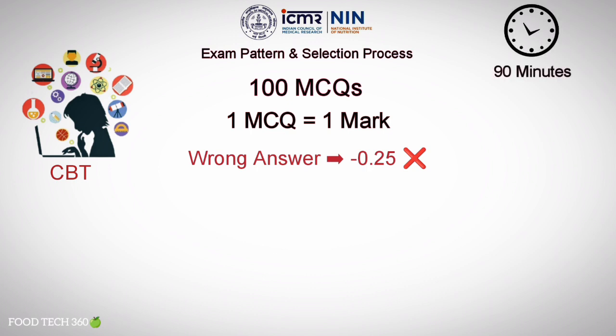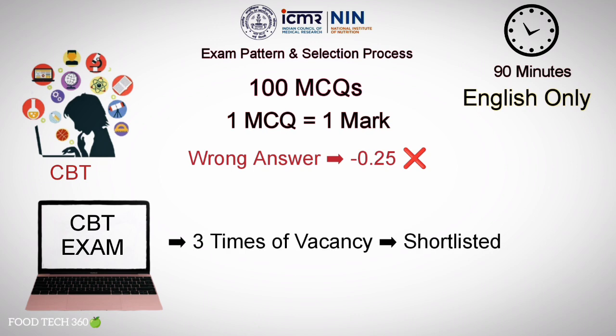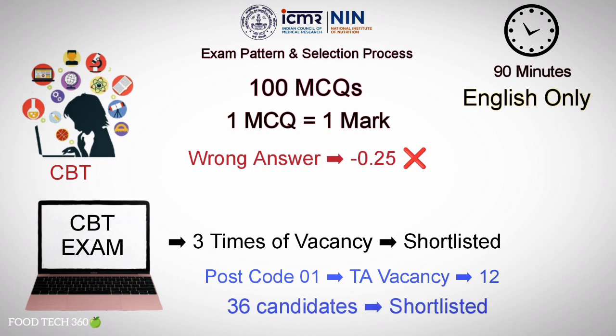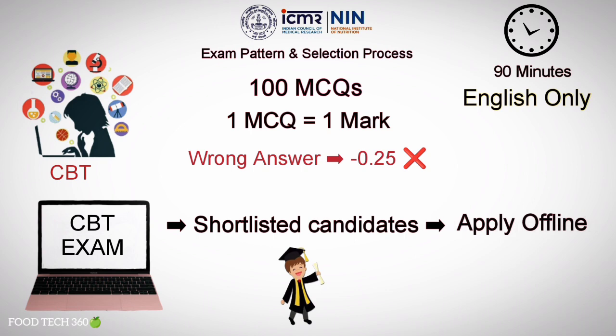The exam duration is 90 minutes and the exam will be in English language only. On the basis of the CBT exam, candidates three times the number of vacancies will be shortlisted. For example, post code 1 of Technical Assistant has 12 vacancies, so three times 12 — that is, 36 candidates — will be shortlisted from the CBT exam. The results of shortlisted candidates will be uploaded on the ICMR NIN official website: www.nin.res.in.